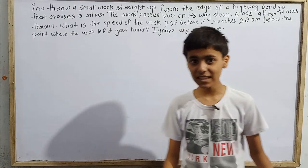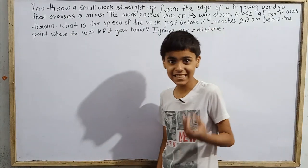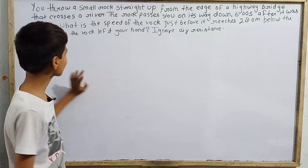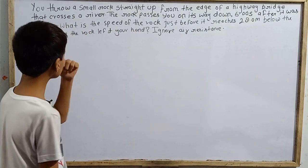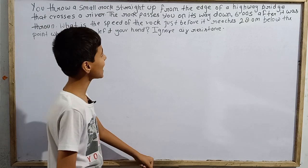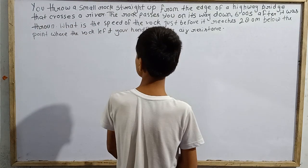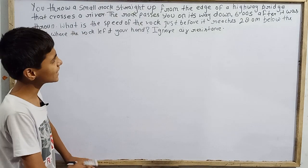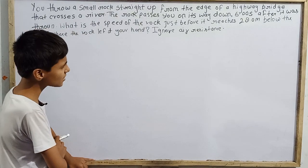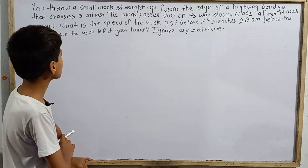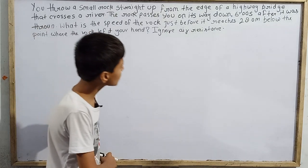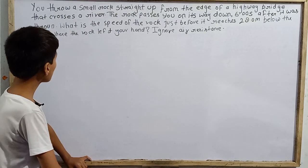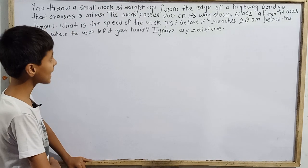Hello everyone and welcome back to Skwanekes. Today I got a new kind of question. Let's try the question which is: you throw a small rock straight up from the edge of a highway bridge that crosses a river. The rock passes you on its way down 6.00 seconds after it was thrown. What is the speed of the rock just before it reaches 28.0 meters below the point where the rock left your hand? Ignore air resistance.